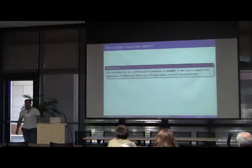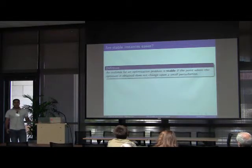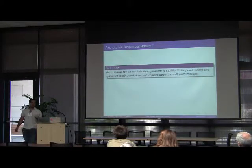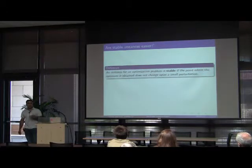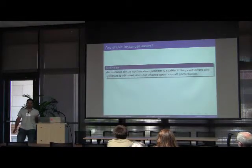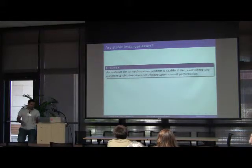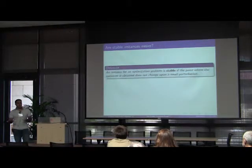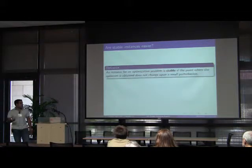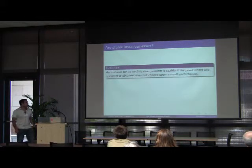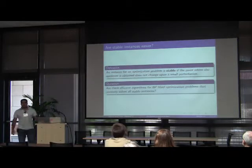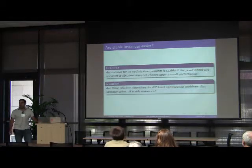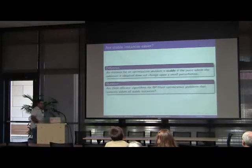Here's the informal definition. We say that an instance for an optimization problem is stable if the point where the optimum is obtained does not change upon a small perturbation. In other words, if we perturb the instance a bit, the configuration for which the optimum is obtained does not change at all. Our main question of interest is the following: Are there efficient algorithms for NP-hard optimization problems that correctly solve all sufficiently stable instances?